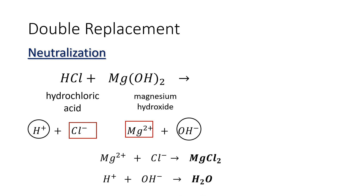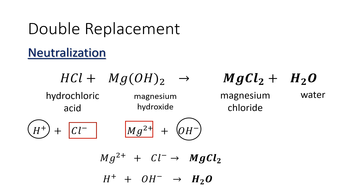And the combination of hydrogen and hydroxide will form H₂O, or water. These are the two products that will form in the reaction between hydrochloric acid and magnesium hydroxide: magnesium chloride as our salt, and H₂O, the water.